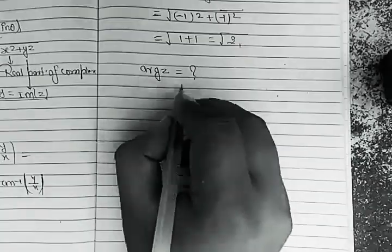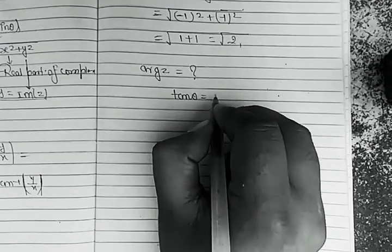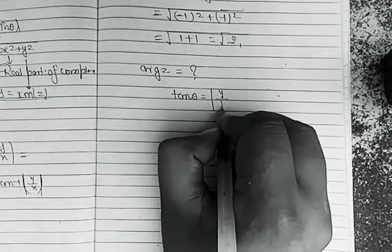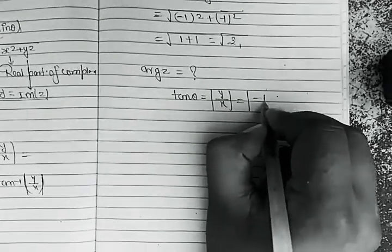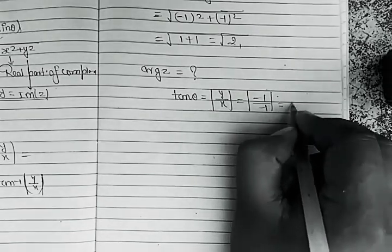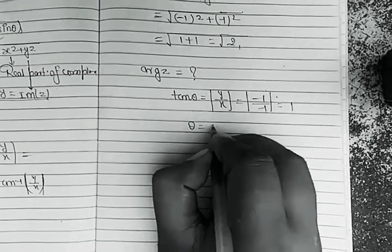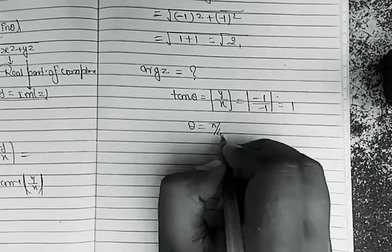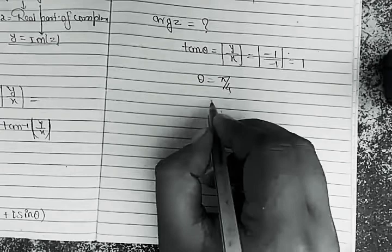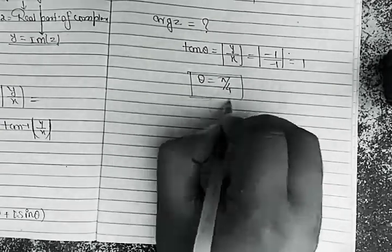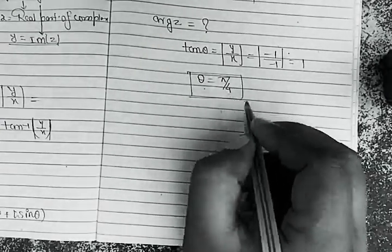Now we need to find θ, the argument of z. First we calculate tan θ: tan θ equals |y/x| = |−1/−1| = 1. So θ equals tan⁻¹(1) = π/4, which is 45 degrees.